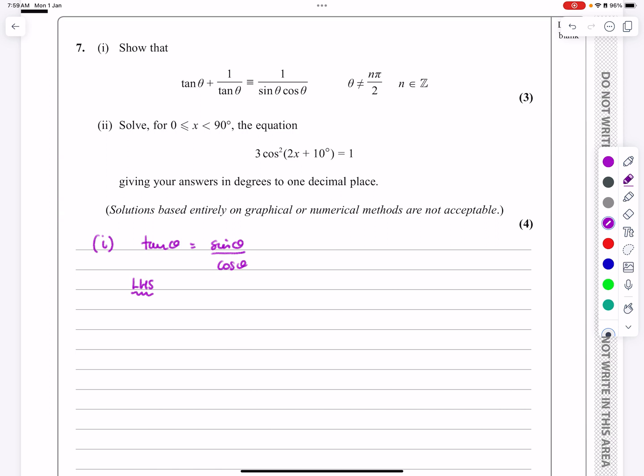The left-hand side becomes sin θ over cos θ, because that's tan θ, plus 1 over tan θ. Now you could write 1 over sin over cos, but actually I would expect most of you to understand straight away that if we're doing 1 over a fraction, you can just turn the fraction upside down. So that's my first step from my left-hand side, and it's fallen perfectly.